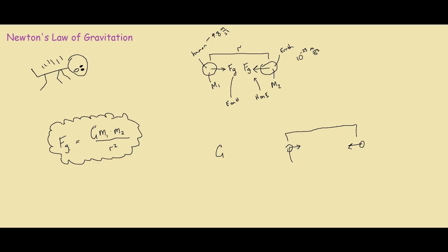As you can see, if the masses are extremely small, Fg would be something like 10 to the negative 18 — something you can't even measure. So what they did was use an apparatus called a torsion balance, and this allowed them to measure the force. So if they knew R, M1, M2, and the force from the torsion balance, they were able to find G, the gravitational constant. What they found was G equals 6.67 times 10 to the negative 11 newtons per meter squared per kilogram squared.